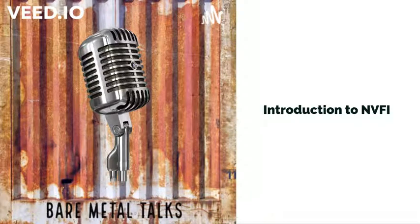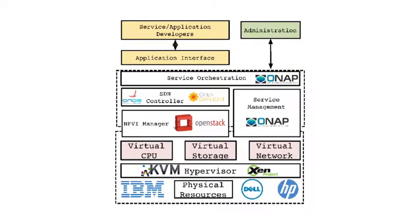Today we will go over network function virtualization concepts and see what problems are addressed by them. Network function virtualization abstracts network functions, allowing them to be installed, updated, and manipulated by software running on commodity off-the-shelf servers. NFV incorporates cloud and virtualization technologies to drive rapid development of new network services with elasticity and automation. These technologies are often called network function virtualization and software defined networking.